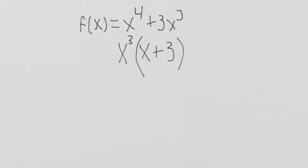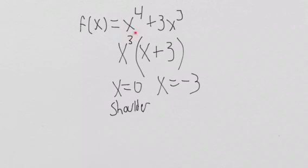So then this tells me that I have x intercepts at x equals 0 and at x equals negative 3, and also that we shoulder at x equals 0 because that factor has a multiplicity of 3.